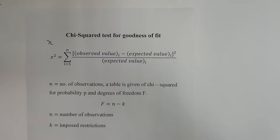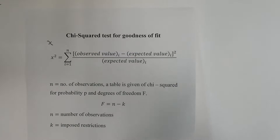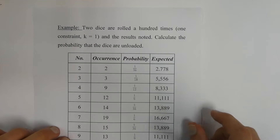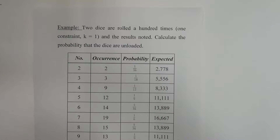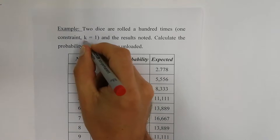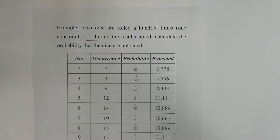It's best to do an example so you can see how it all fits together. Two dice are rolled 100 times. We're given that constraint, so k is equal to 1 — keep this in mind for future calculations. You could have other constraints as well; for example, a row might only be valid if an even number or odd number is observed, so there could be more than one constraint.